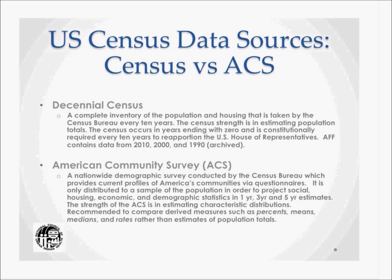For previous censuses such as 1980, data are located on the U.S. Census Bureau's main website. The American Community Survey, or ACS, is a nationwide demographic survey providing current profiles of America's communities via a questionnaire. It is distributed to a sample of the population to project social, housing, economic, and demographic statistics in one-, three-, and five-year estimate formats. The strength of the ACS is estimating characteristic distribution — it is recommended for comparing derived measures such as percents, means, medians, and rates, rather than estimates of population totals, which are best obtained from the decennial census.